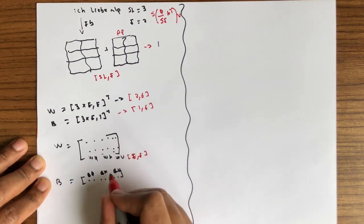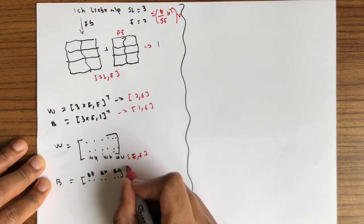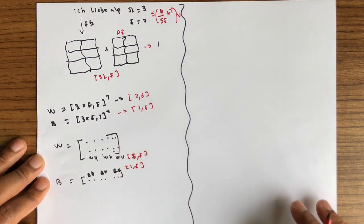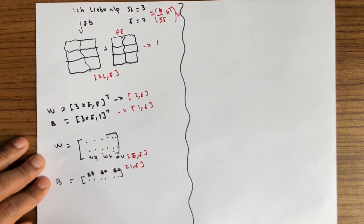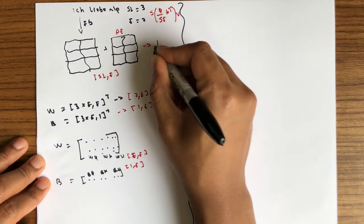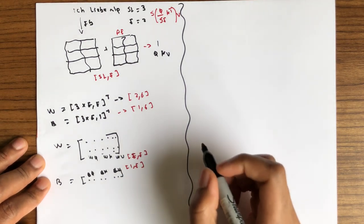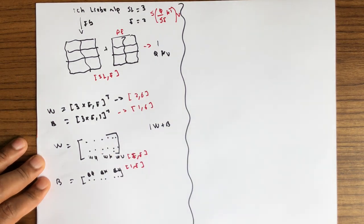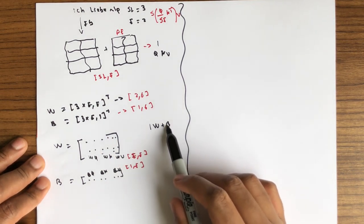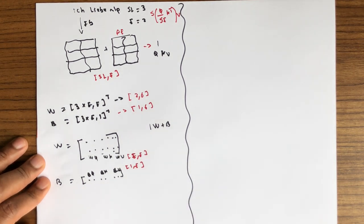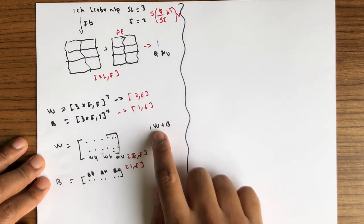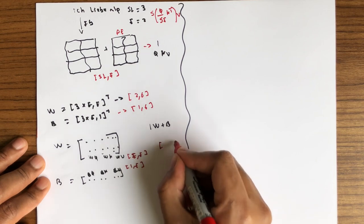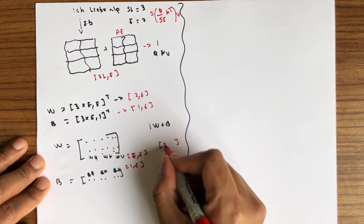Each of these b sub-vectors will have a dimension of 1 by e. To transform the query, key, and value — which is just this I — we compute i multiplied by W plus b. We know the dimensions of i, W, and b, so we will end up with a tensor of dimension sl by 6 after this computation.